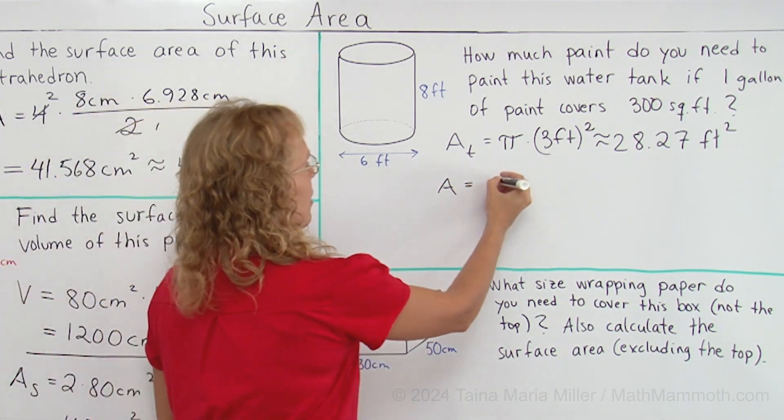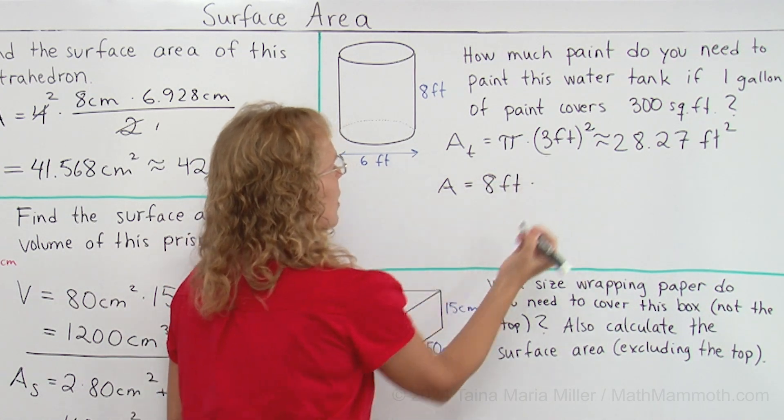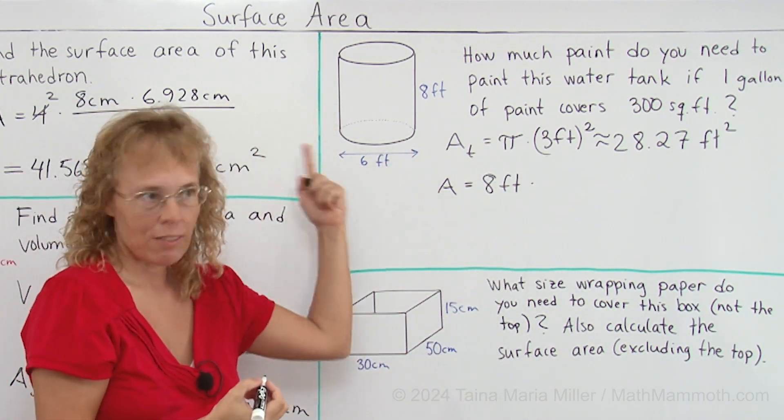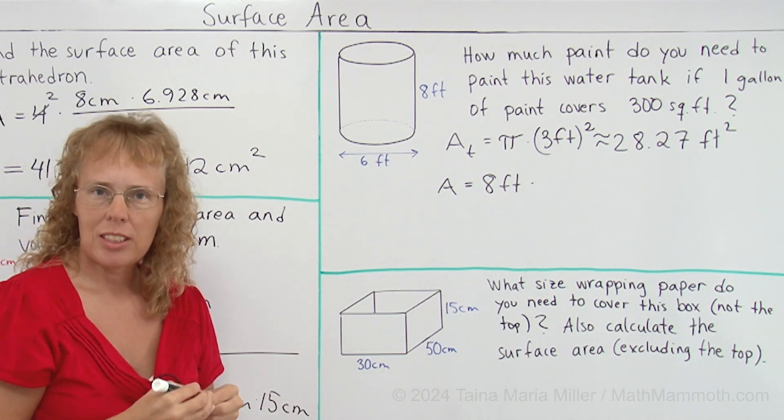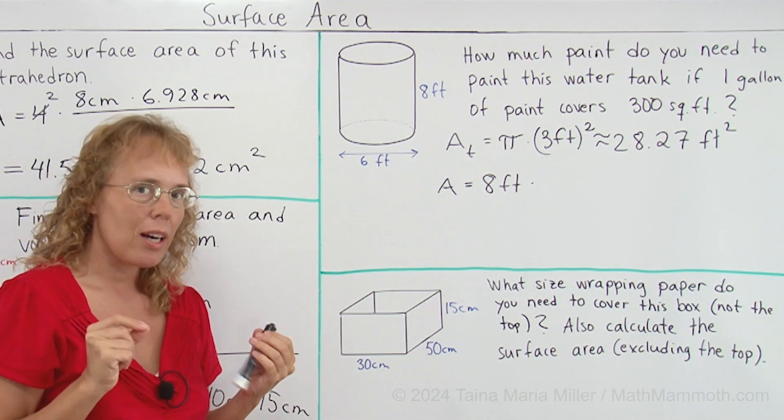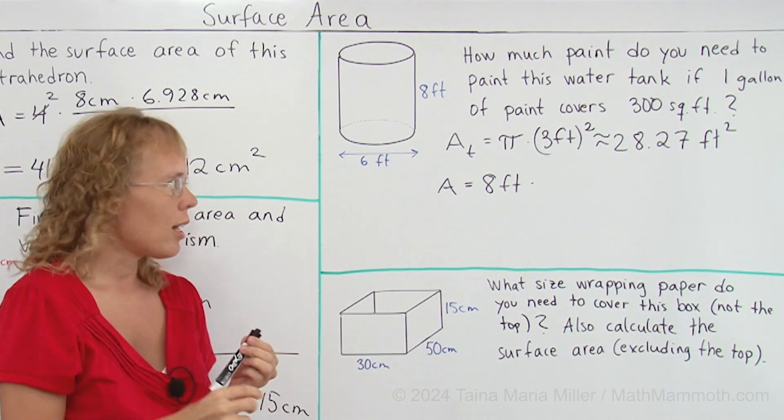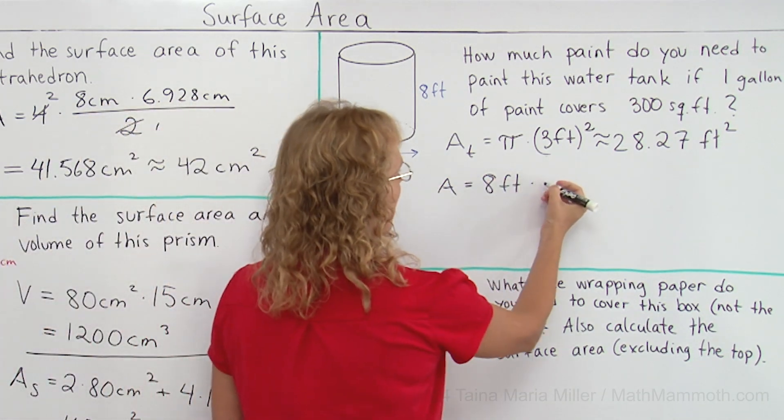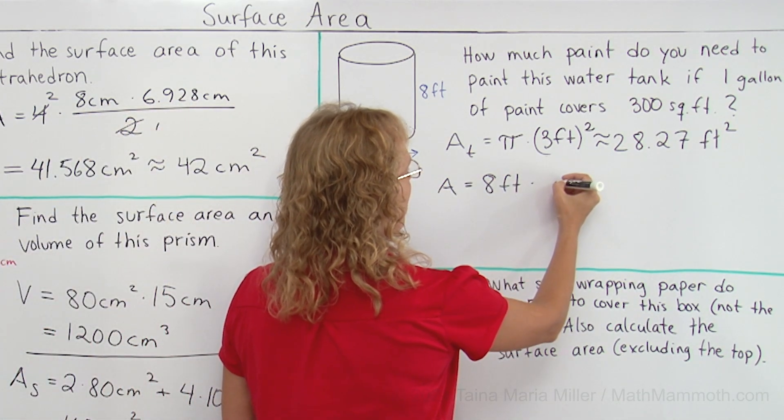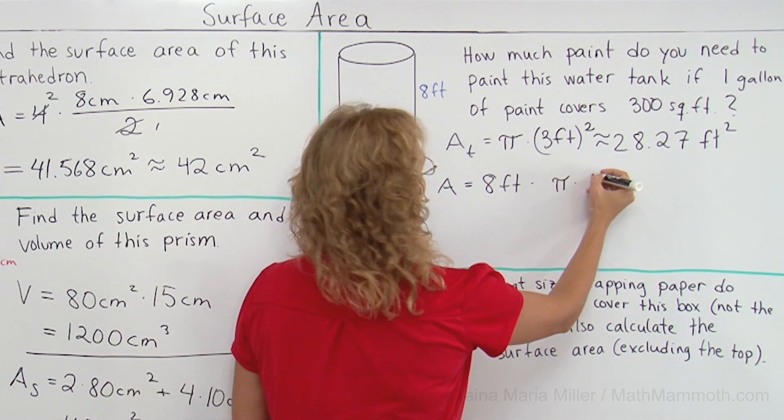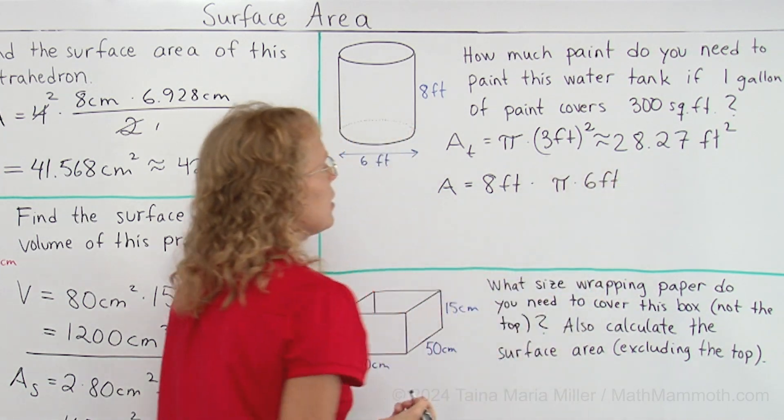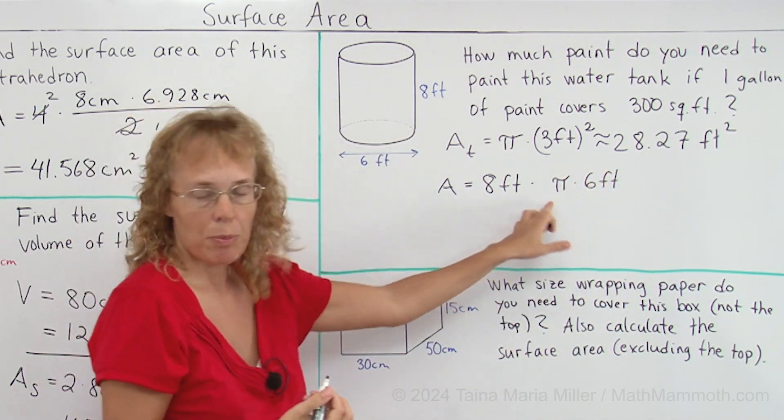So the other area here we need to calculate would be a rectangle with height eight feet and then the circumference of the circle. Circumference of a circle is calculated by pi times the diameter so that would be pi times the six feet.